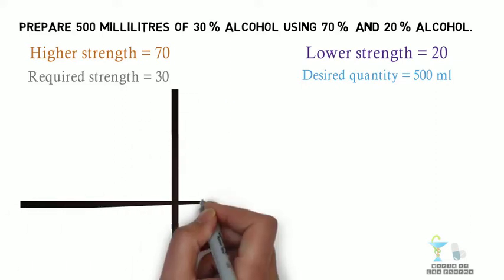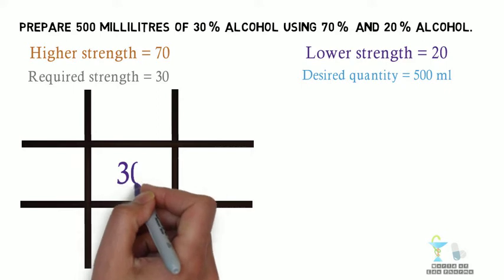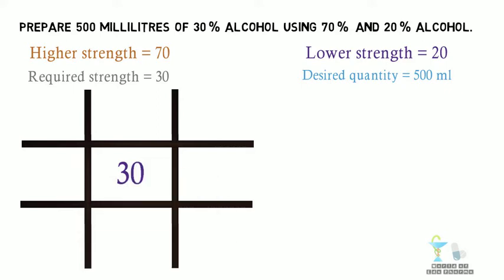Now as said before arrange the data. The required percentage 30% is written at the center. Higher percentage 70% on top left side. Lower percentage 20% on bottom.